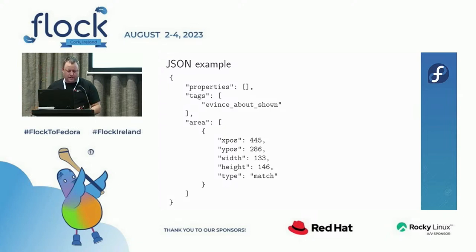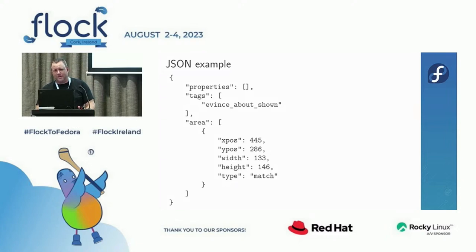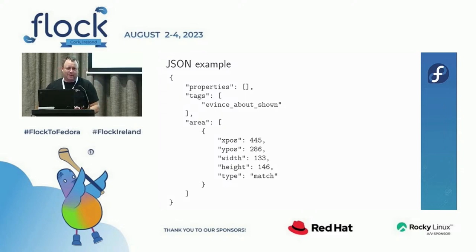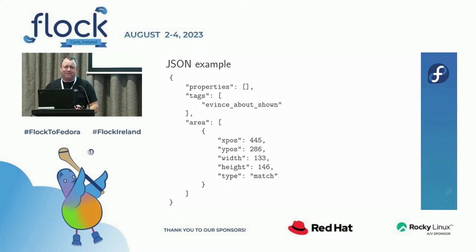Each needle has an area description and a list of tags. For example, tag 'evince-about-shown' controls that the About window of Evince has appeared. The area starts at X=445, Y=286 and is 133×146 pixels. The type is 'match', meaning visual comparison. There are also OCR needles in documentation, but they require unmerged patches and haven't been tested yet.